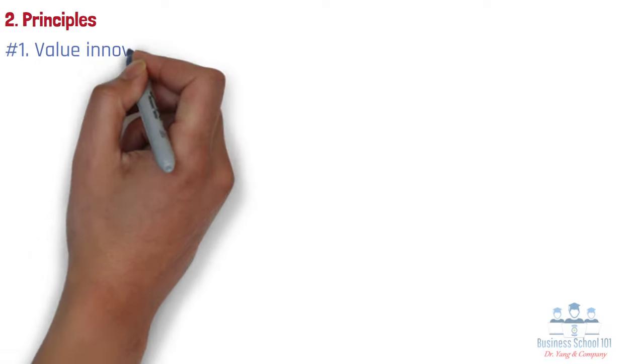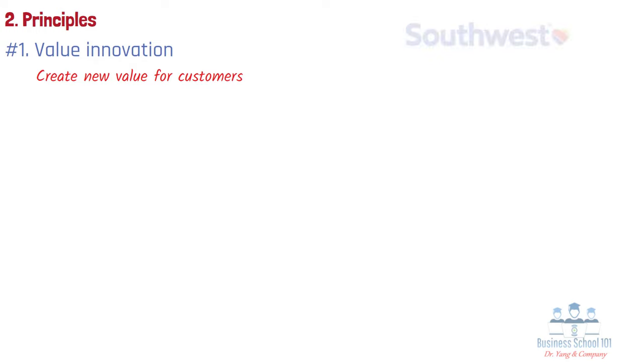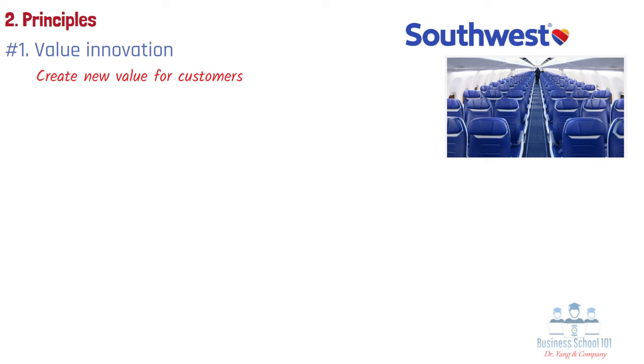Section 2: Principles. In general, there are six principles for the Blue Ocean Strategy. Number 1: Value Innovation. This principle emphasizes the importance of creating new value for customers by pursuing differentiation and low cost simultaneously. Value Innovation aims to break the traditional trade-off between cost and differentiation, offering a unique product or service that appeals to a wider range of customers. For example, Southwest Airlines pursued value innovation by offering low-cost air travel without compromising on quality of service. The company eliminated non-essential services like in-flight meals and assigned seating, and focused on providing friendly service, fast turnaround times, and point-to-point routes. This approach allowed Southwest to offer lower fares while still maintaining customer satisfaction, differentiating itself from traditional airlines.